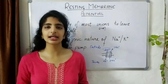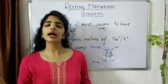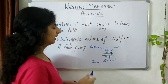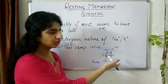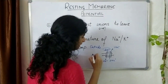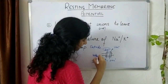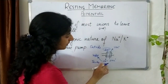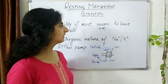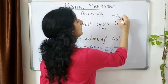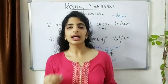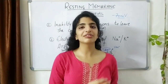This corrects for the sodium leaky channels that allow some sodium ions to enter. The potassium ions that enter can also make the cell more positive, and these are corrected by the potassium leaky channels in the membrane. This is how a resting membrane potential of negative 70 millivolts is maintained in the cell.